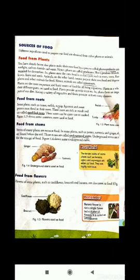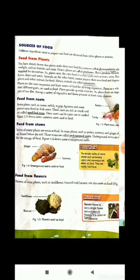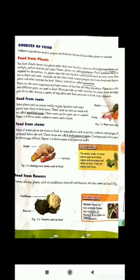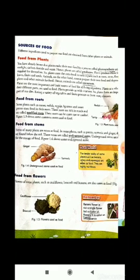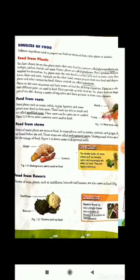Animals, on the other hand, cannot prepare their own food and depend upon plants and other animals for food. Hence, animals are called consumers. They cannot make their own food but depend on others.